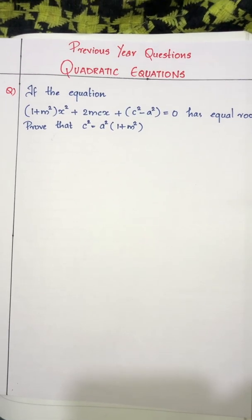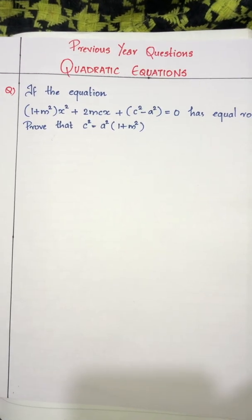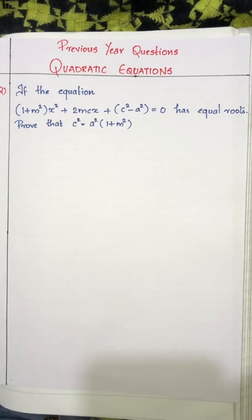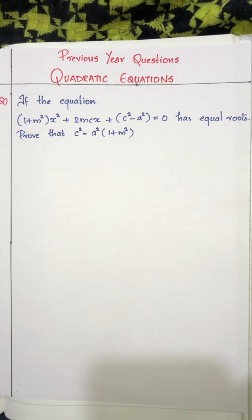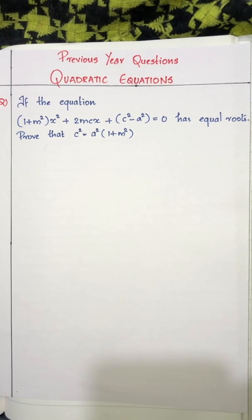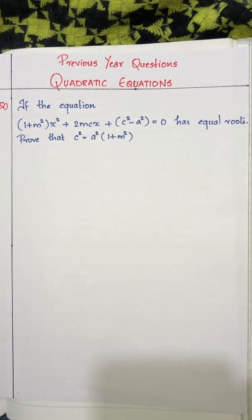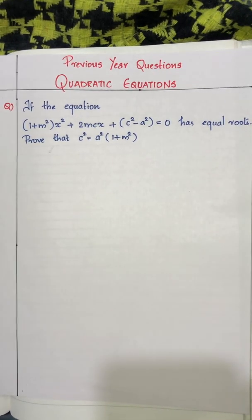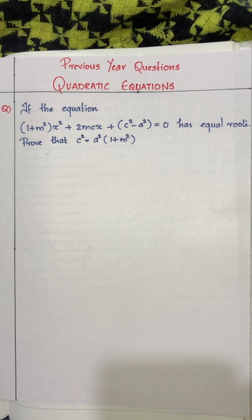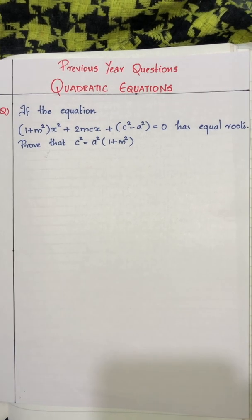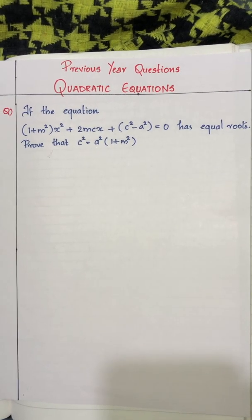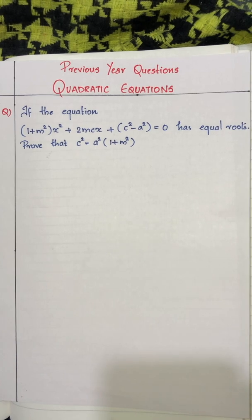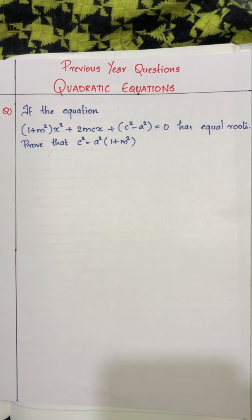Hi students, today let us discuss an important question from the chapter quadratic equation. The question is: if the equation (1 + m²)x² + 2mcx + c² - a² = 0 has equal roots, prove that c² = a²(1 + m²).